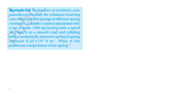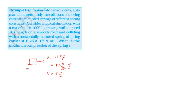The car is moving at 18 km per hour. Converting: 18 km/h multiplied by 5 over 18 gives 5 m per second. So the velocity of the car is 5 m per second and the mass of the car is 1000 kg.